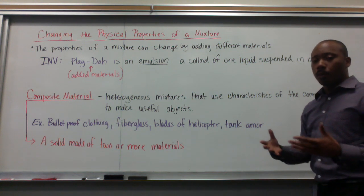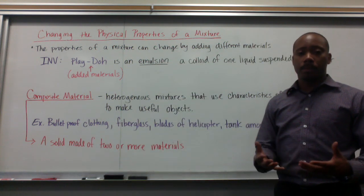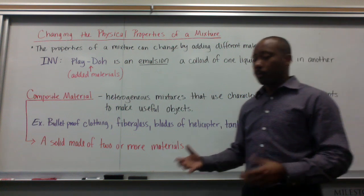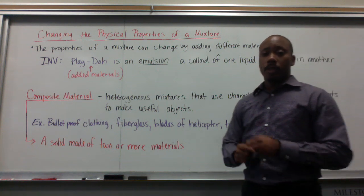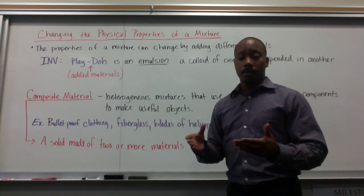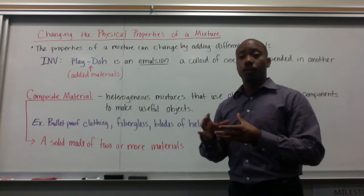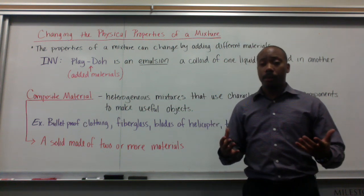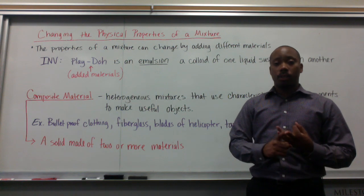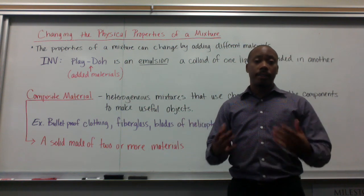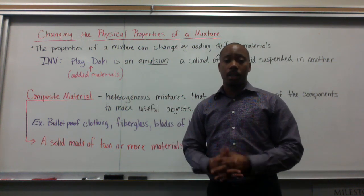A very easy way of thinking about that is: a solid made of two or more materials — that's a composite material. Some examples would be bulletproof clothing, fiberglass, blades on a helicopter, tank armor — pretty much any advanced technology you can think of is a composite material. Two or more solids coming together that are useful for man. We use composite materials to make things stronger, to make things last longer, and to make things resistant to conditions of nature or wear and tear. Composite materials are very important for the advancement of technology in our society.